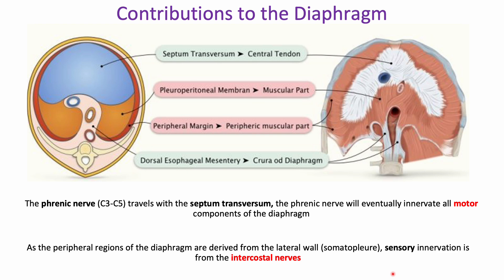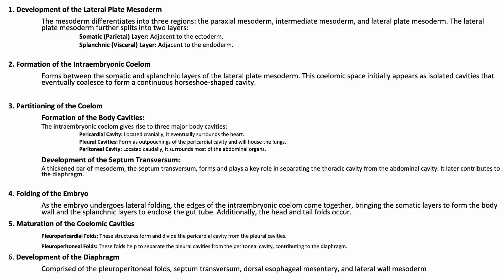The phrenic nerve also provides sensory innervation, but only to the medial parts of the diaphragm, whereas the intercostal nerves innervate the lateral aspects for sensory innervation. This split innervation exists because the lateral musculature is derived from the lateral wall — this peripheral margin — so the sensory information from this region comes from intercostal nerves. In summary: all motor components are innervated by the phrenic nerve (C3 through C5), sensory to the medial diaphragm is also via the phrenic nerve, and sensory to the lateral margins is via the intercostal nerves.